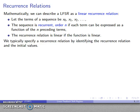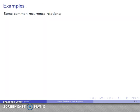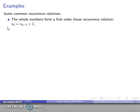Typically, we specify the recurrence relation by identifying what the recurrence relation is, and then identifying what the initial values are. So, for example, some common recurrence relations we have, the whole numbers form a first-order linear recurrence relation. Every whole number is one more than the whole number immediately preceding it. So, this function is linear. It relies on the first term before the current value. So, that's a first-order linear recurrence relation. And I have to specify the initial value. x0 is going to be 0.